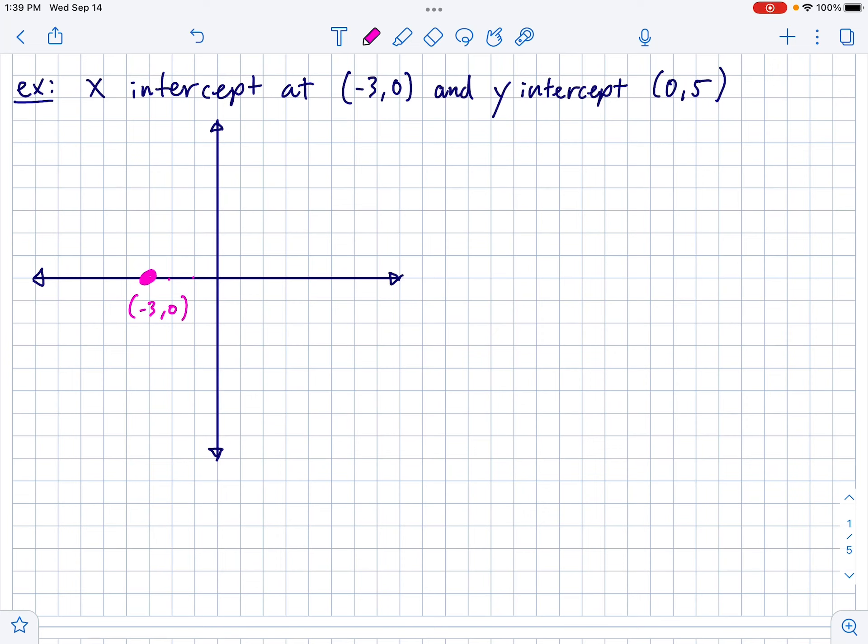The y-intercept is an x of 0 and a y of 5, so we go from 0 up 1, 2, 3, 4, 5, and then here is your y-intercept, 0, comma, 5. Then you make a line that goes through those points, something like that. And this is a sufficient sketch for the given information. Y-intercept of negative 3, I mean, sorry, x-intercept of negative 3 and a y-intercept of 5.